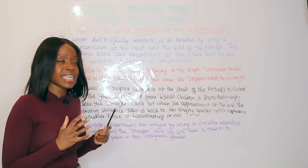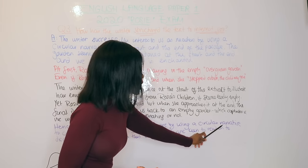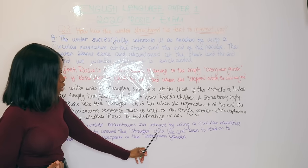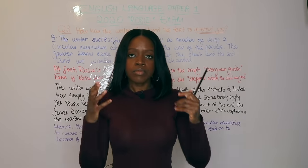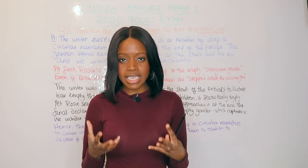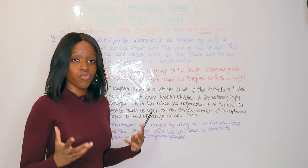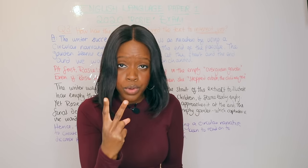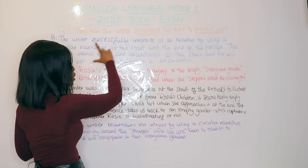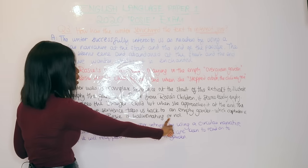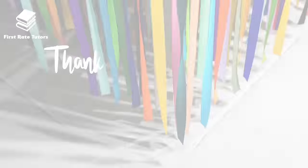The final step in the PEEL paragraph is linking it back to the question: 'Hence, the writer maintains our intrigue by using a circular narrative to create curiosity around the stranger child — we are keen to read on to discover if it will reappear in this overgrown garden.' This is a grade 9 paragraph response. Aim to do two of these for question three of Language Paper 1, and try to apply this structure in your own writing.